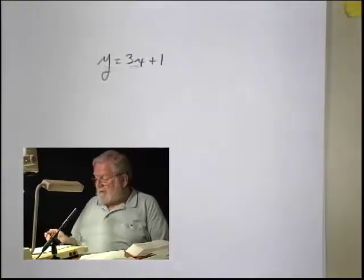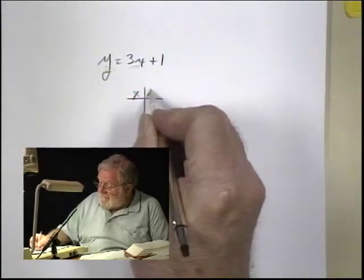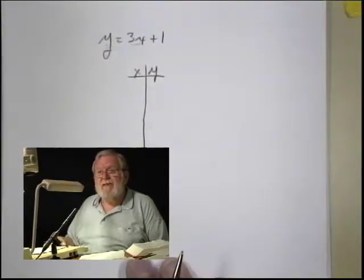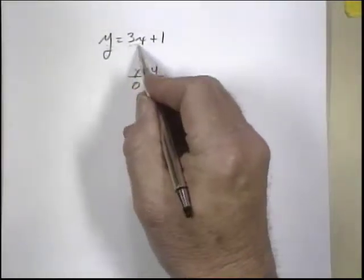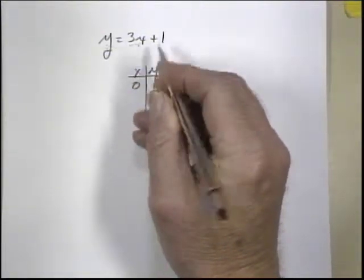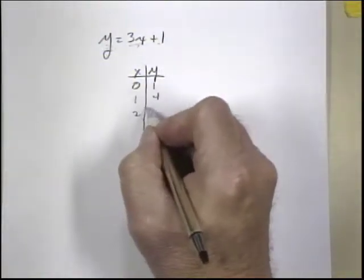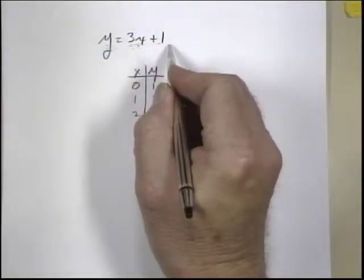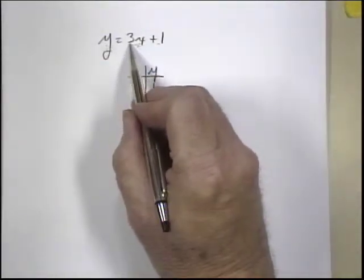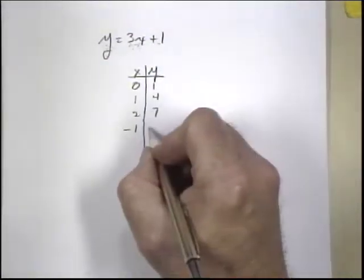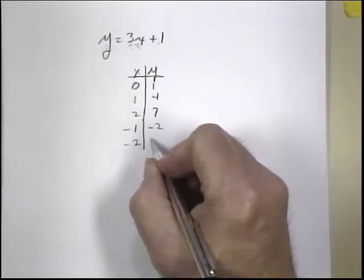In this equation, we could generate ordered pairs by creating a table, assuming values for x, and calculating the corresponding y. If x equals 0, we'd have 3 times 0 plus 1, which is 1. If x equals 1, we'd have 3 times 1 plus 1, which is 4. If x equals 2, we'd have 2 times 3, which is 6, plus 1 is 7. For x equals minus 1, minus 1 times 3 is minus 3, plus 1 is minus 2. For x equals minus 2, minus 2 times 3 is minus 6, plus 1 is minus 5.